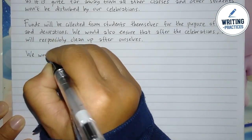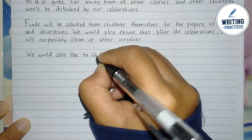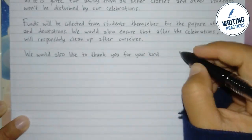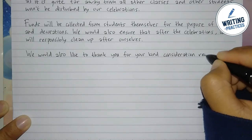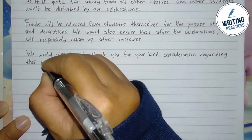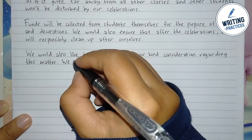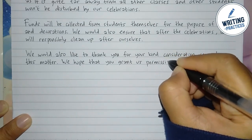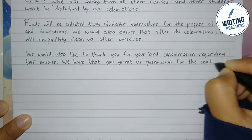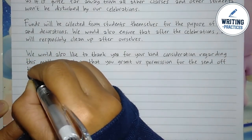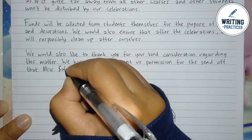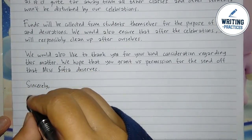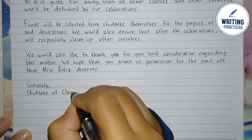In the fourth paragraph, thank the recipient for their consideration about this matter, and write your hope as the closing sentence. For example, write that you hope the recipient will grant the permission. Add warming words such as the party being the send-off the teacher deserves, and so on. Finally, close the letter with 'Sincerely,' then write your full name or the organization or the class, and write the school name.